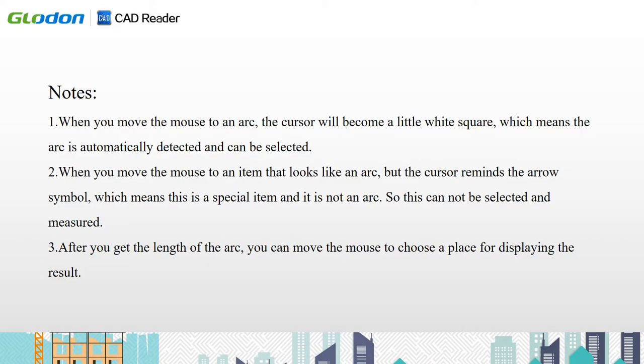When you move the mouse to an arc, your cursor will become a little white square, which means the arc is automatically detected and can be selected. When you move the mouse to an item that looks like an arc but the cursor remains the arrow symbol, that means this is a special item and it is not an arc, so it cannot be selected and measured.